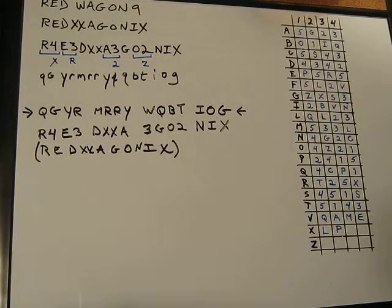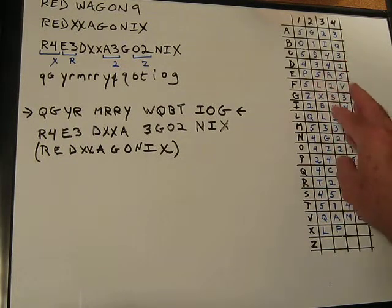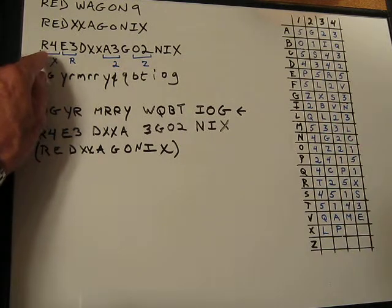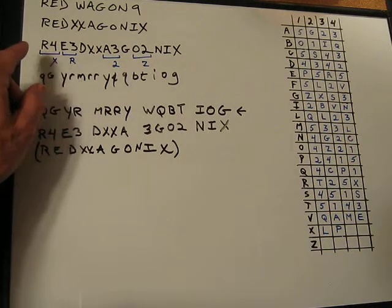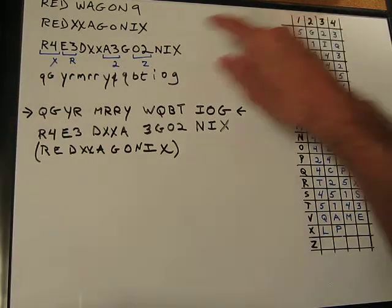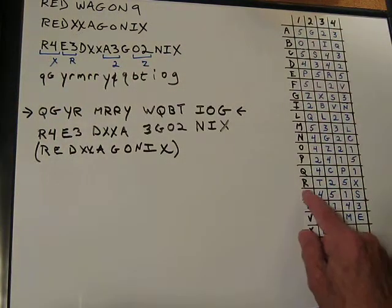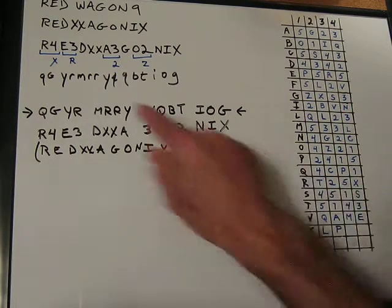How do we decide which ones we're going to choose? We take the letter before and the number, and we simply look it up. For example, the first one: we go down to R and then over to 4 — that gives an X. You can see I have the X there.